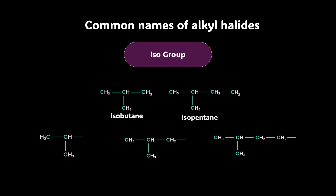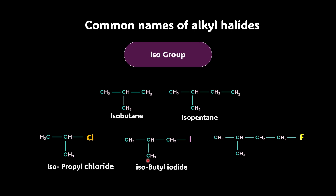Now that you're clear about the isoalkyl group, let's try some examples. If I put a chloro on the isopropyl group, the name is isopropyl chloride. If I put an iodine on the isobutyl group, the name is isobutyl iodide. And with a fluoro on 5 carbons with the second-last carbon having a methyl group, we call it isopentyl fluoride.